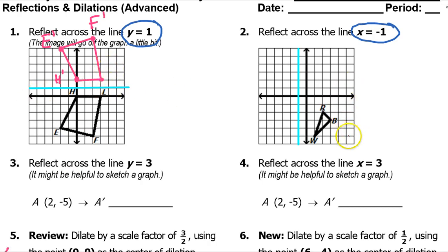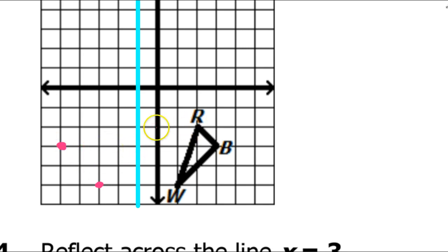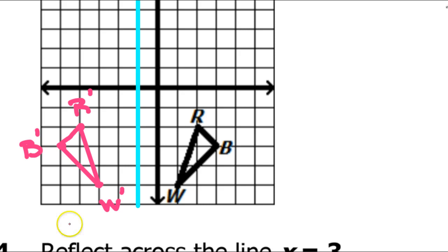Let's do the same thing with problem number 2. Point w is 2 units away from the blue line, so I need to go 2 units to the left of the blue line — that's going to be the image. Point b is 4 units from the blue line, so I'm going to do 4 units to the left, and that'll be b-prime. Point r is 3 units to the right of the blue line, so I'm going to go 3 units to the left. Now I'll connect the dots. So there's your reflection: b-prime, r-prime, w-prime.